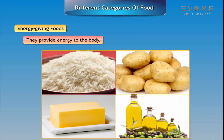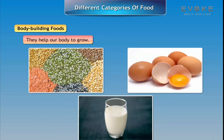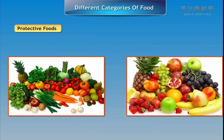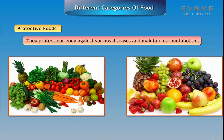Energy-giving foods provide energy to the body. Body-building foods are rich in proteins and help our body to grow. Protective foods are rich in vitamins and minerals; they protect our body against various diseases and maintain our metabolism.